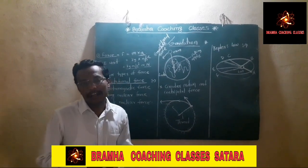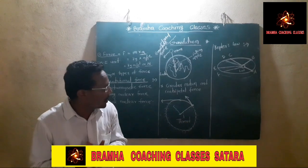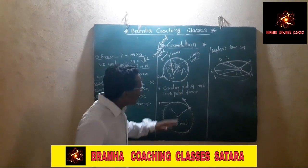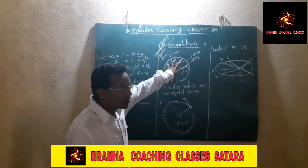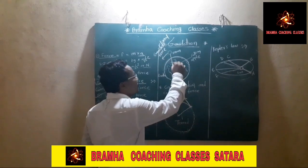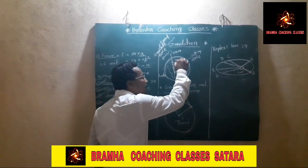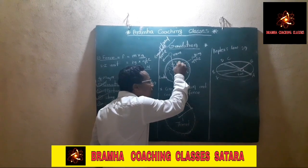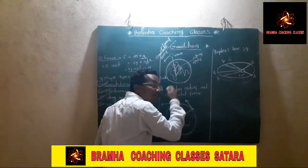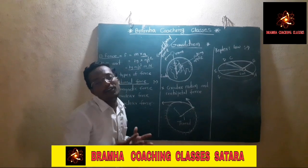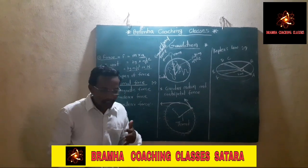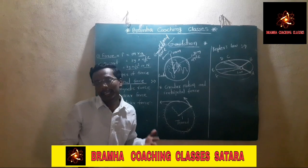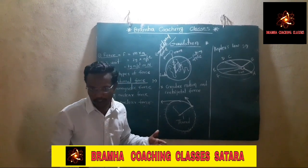Now, we are explaining this concept of gravitation with the help of this field. Imagine that this is the earth and this is an apple tree. The apple comes in a downward direction — not only downward, but perpendicular downward direction and towards the center. Because of that, Newton started thinking: why does the apple fall on the ground? Some force causes the apple to come into motion.